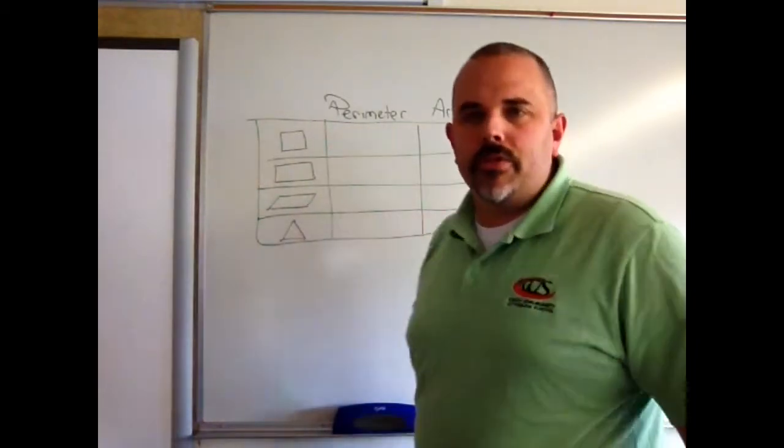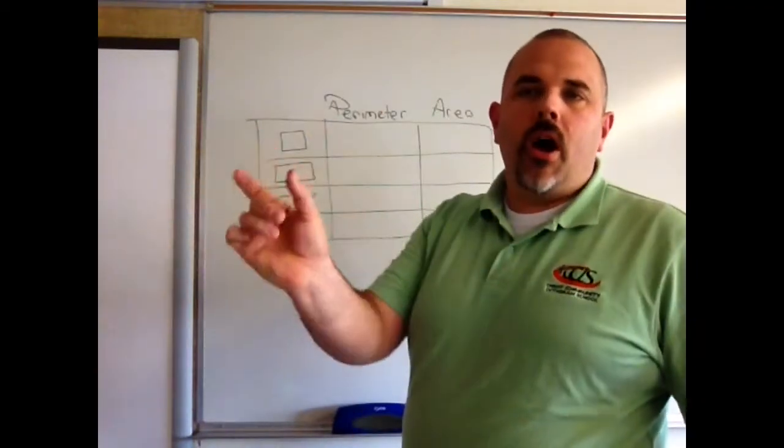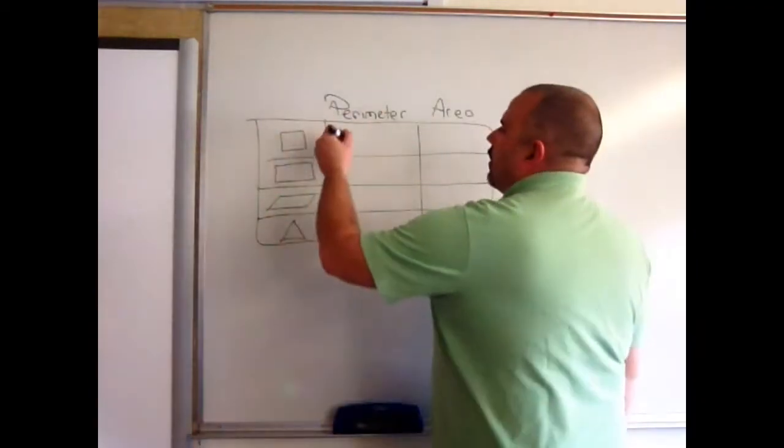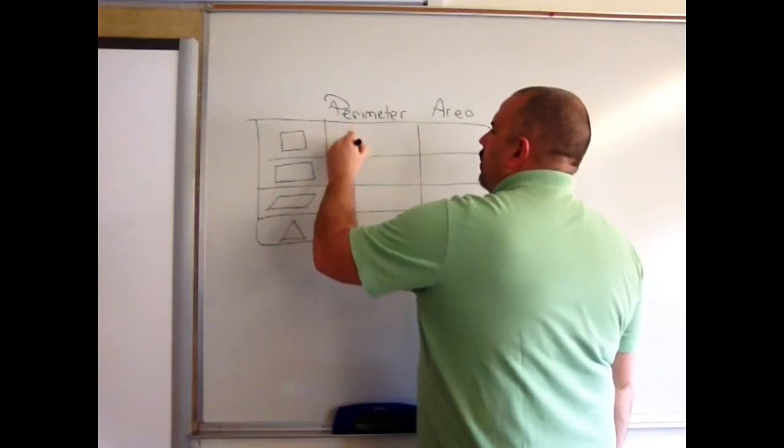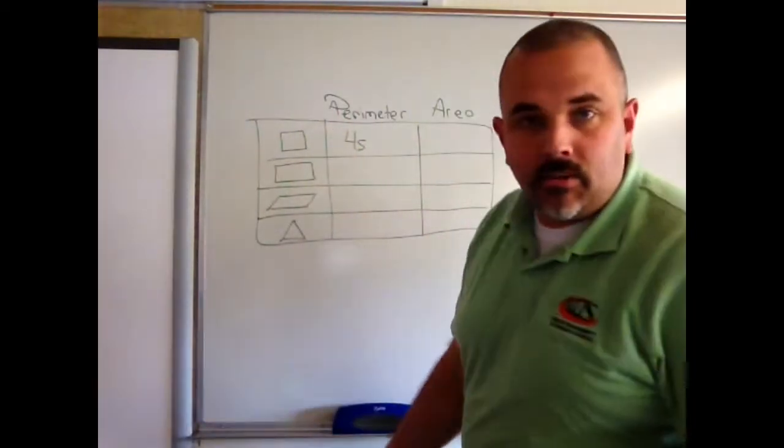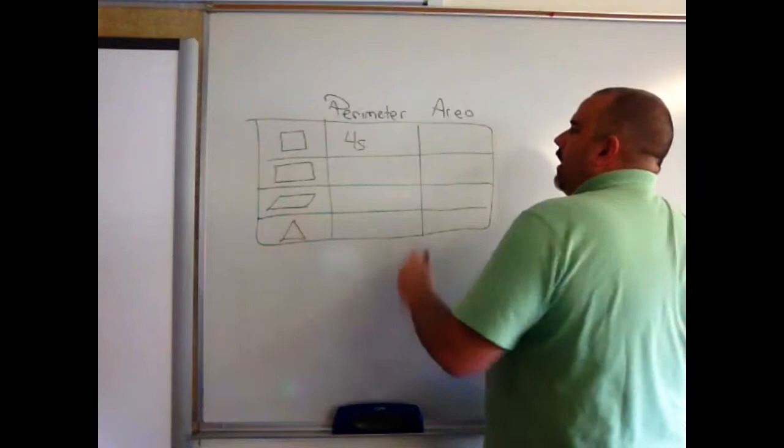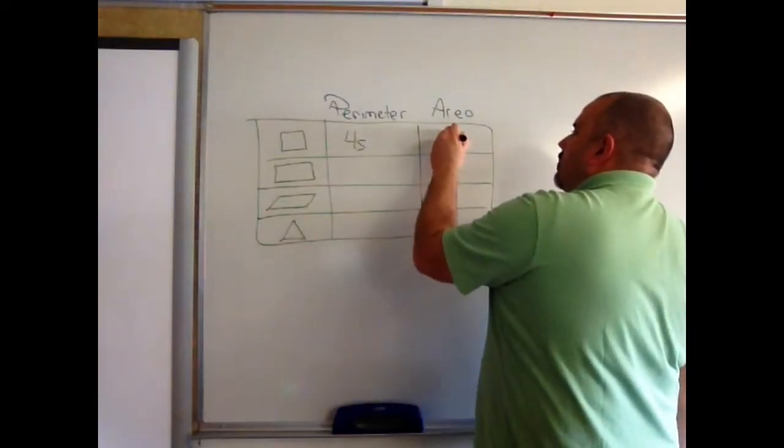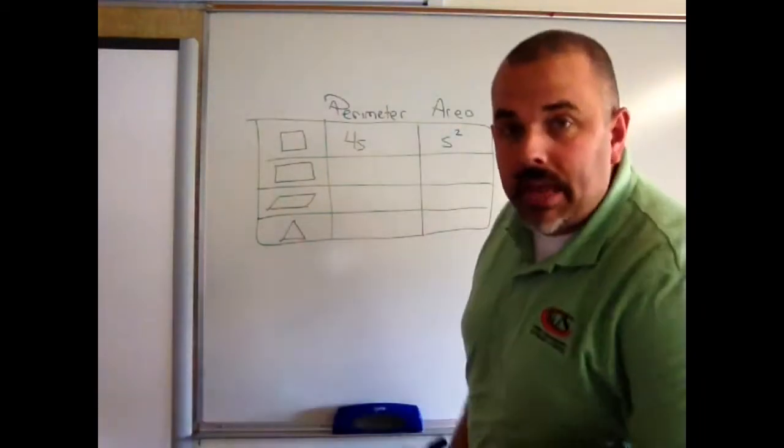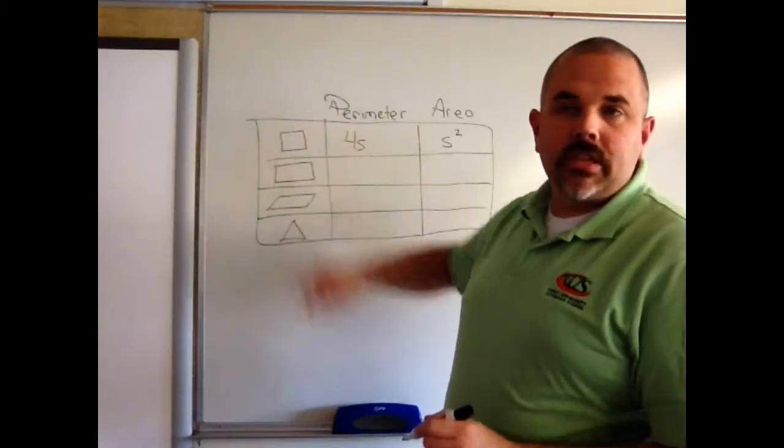We'll start with the square first. On a square all four sides are identical. The perimeter of it is 4s. In this case, s is equal to side. The area is s squared or s times s, whatever the distance of a side is.